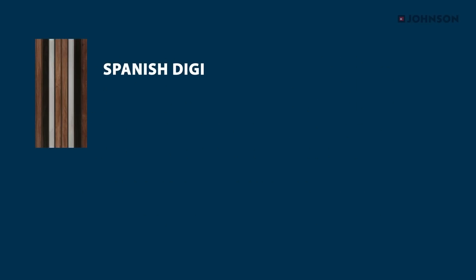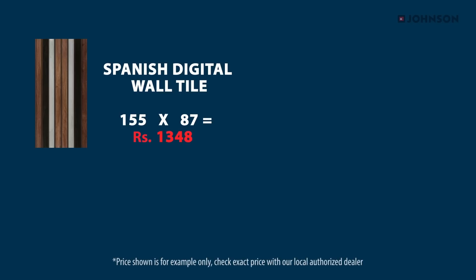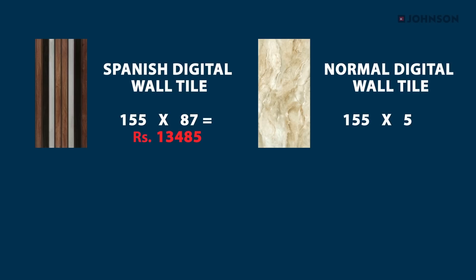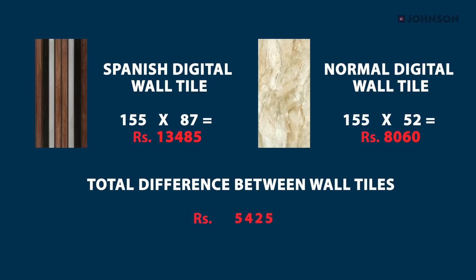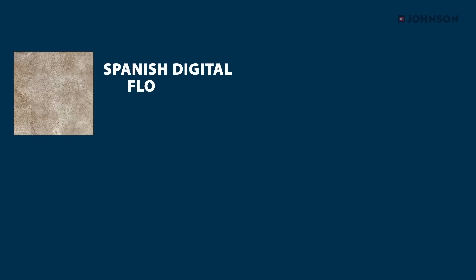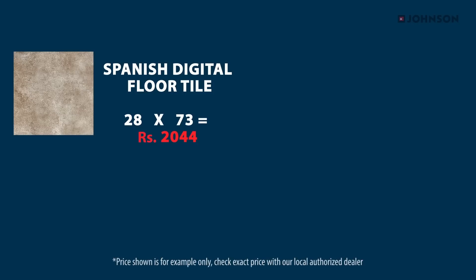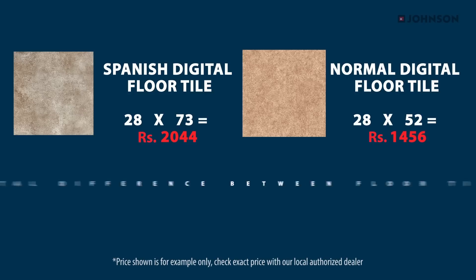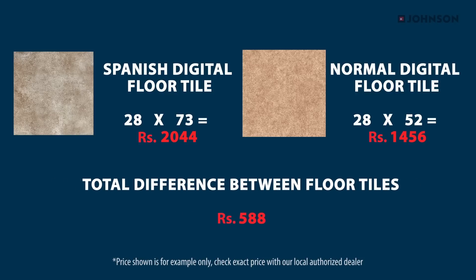Hence, for the Spanish digital wall tile option, the total cost per wall would be Rs.155 x 87 which equals Rs.13,485. The total cost for the normal digital wall tile would be Rs.155 x 52 which equals Rs.8,060. The total difference in wall tiling cost would be Rs.5,425. Similarly, for the coordinated craft floor tiles for the Spanish Series option, the total cost would be Rs.28 x 73 which equals Rs.2,044. The total cost for the coordinated normal digital floor tile would be Rs.28 x 52 which equals Rs.1,456. Hence, the total difference in floor tiling cost would be Rs.588.